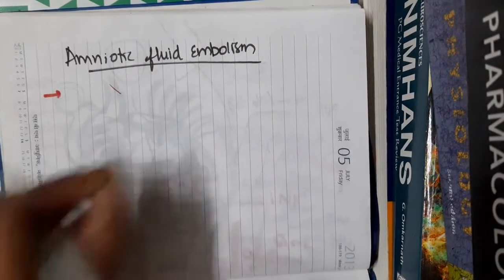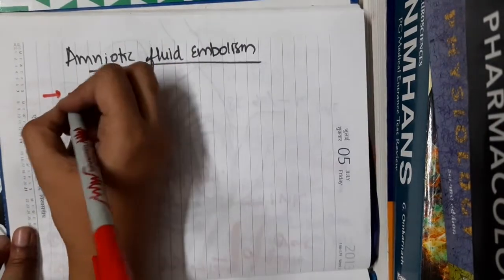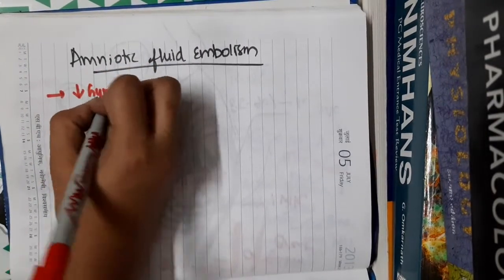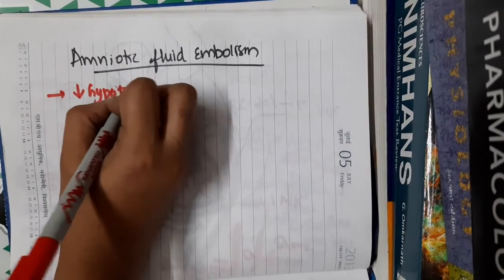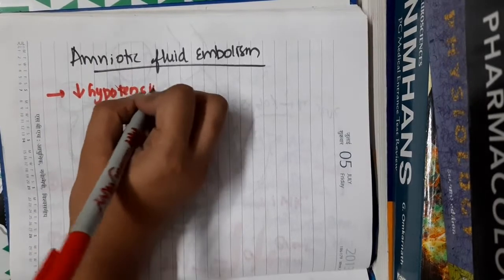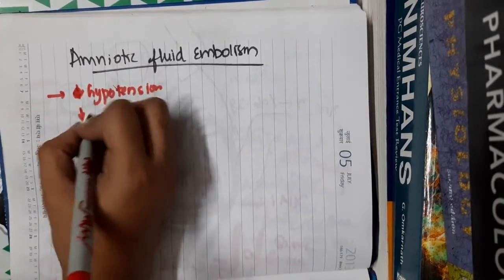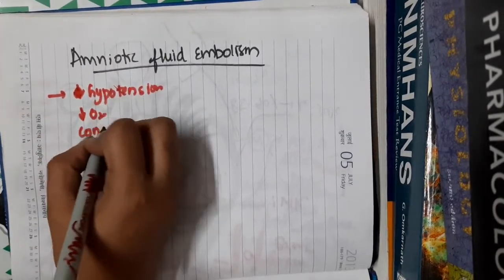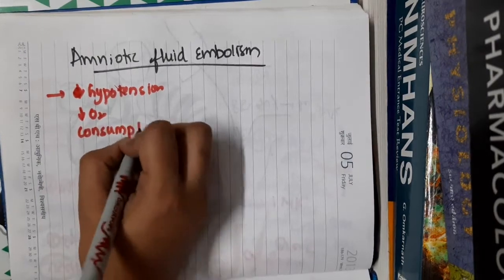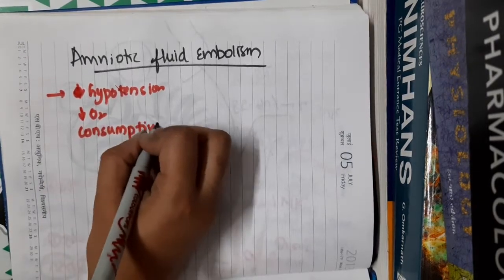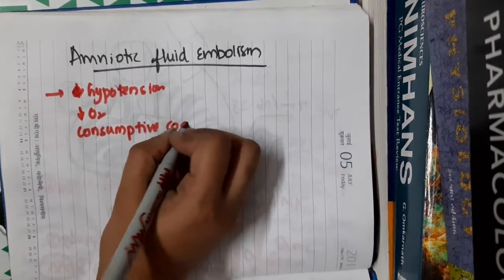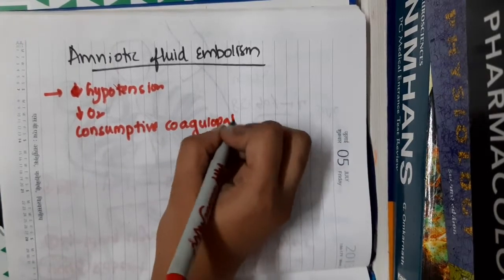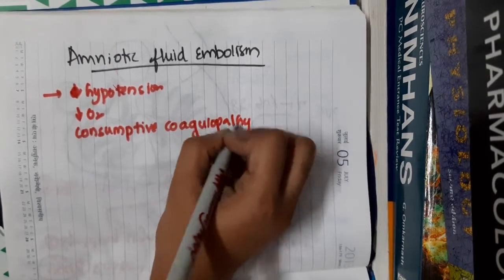Amniotic fluid embolism is a complex disorder which is characterized by hypotension — that is decreased BP — hypoxia, and consumptive coagulopathy. This is a triad of hypotension, hypoxia, and consumptive coagulopathy.